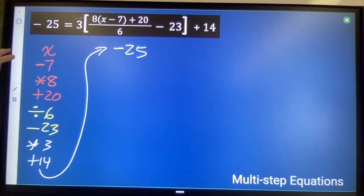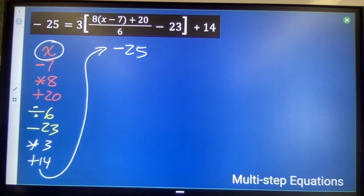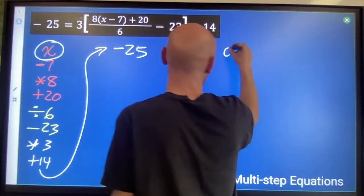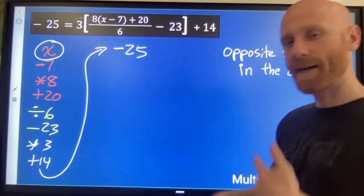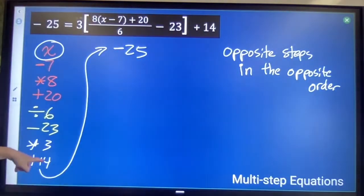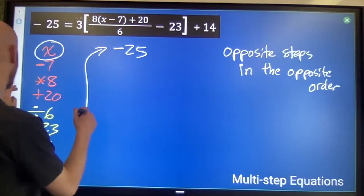Now, if you want to find out what x is, if you want to get back to your starting point, you just need to backtrack. Opposite steps in the opposite order. So, I'm going to unwind this. Instead of plus 14, I'm going to undo that: minus 14.